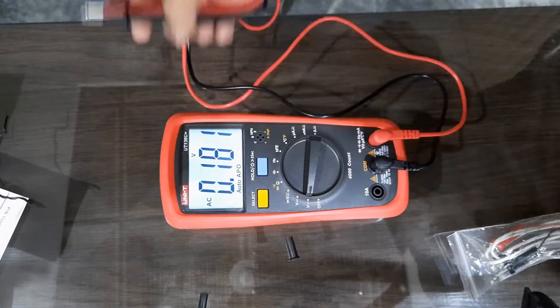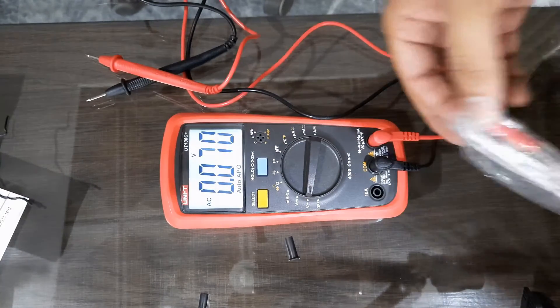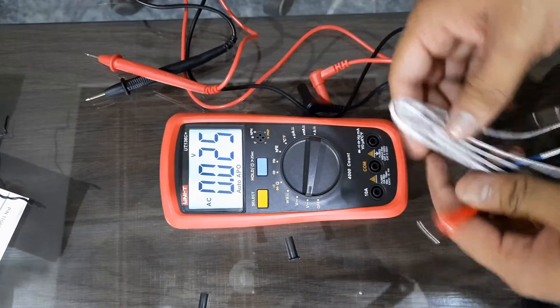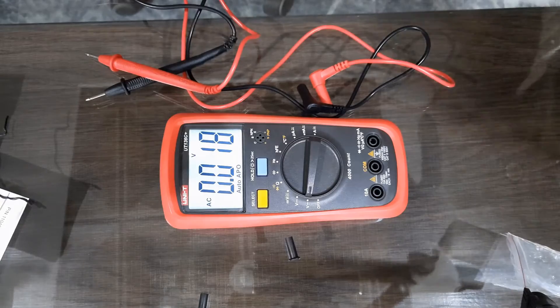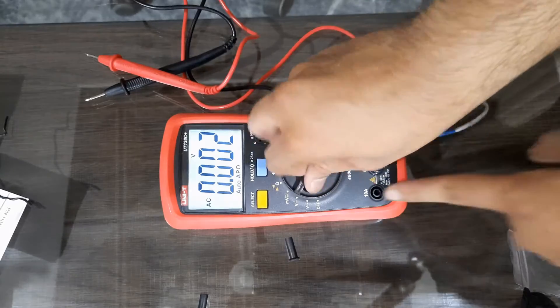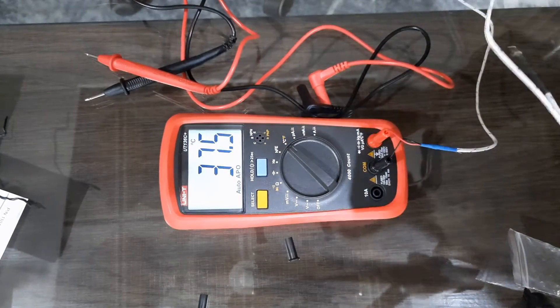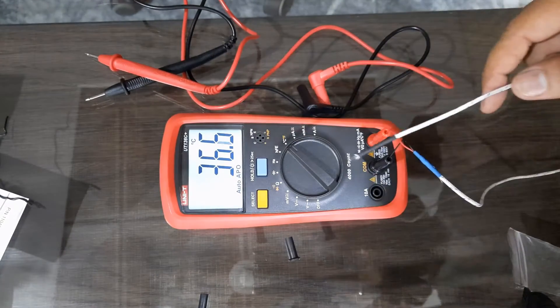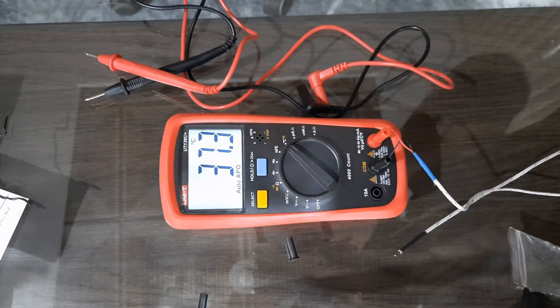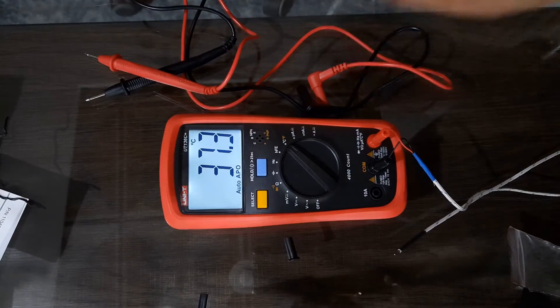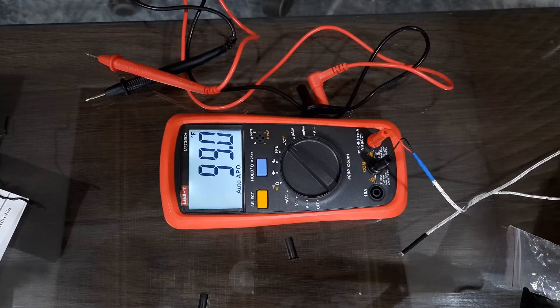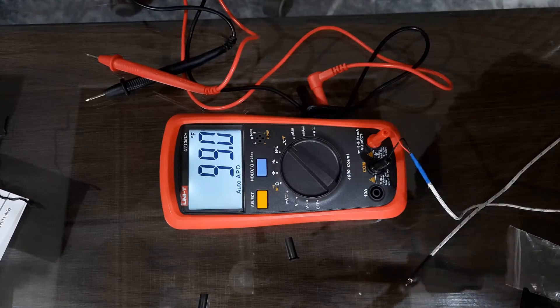Now we'll check the temperature. First, remove this probe. It shows 36 degrees Celsius. This is the sensor. Now switching to Fahrenheit.